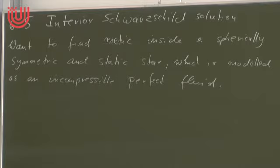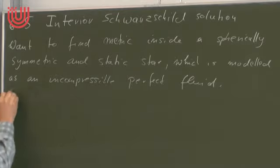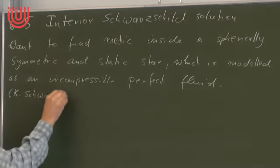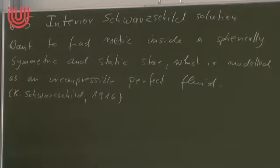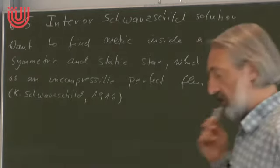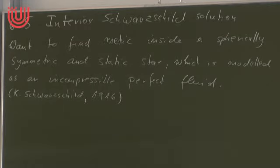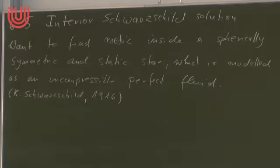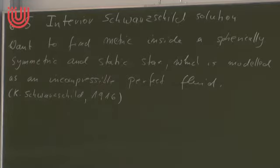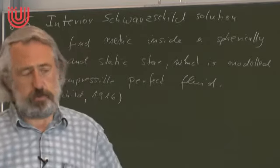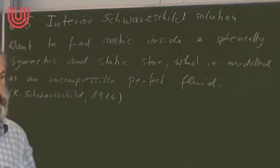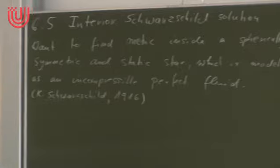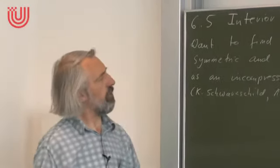The solution we want to derive was already found by Karl Schwarzschild in 1916 in a follow-up paper to the vacuum solution. He was at the Eastern Front when he wrote the first paper and sent it to Einstein. Einstein presented it at the academy and was delighted that somebody had solved his complicated field equation. Schwarzschild then came back from the front very ill, suffering from a strange skin disease from which he finally died. In the time he was in hospital, he wrote the second paper on the interior solution — shortly after finding the exterior solution in the same year.